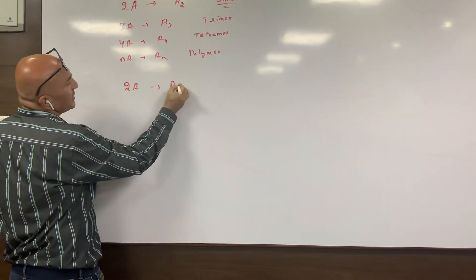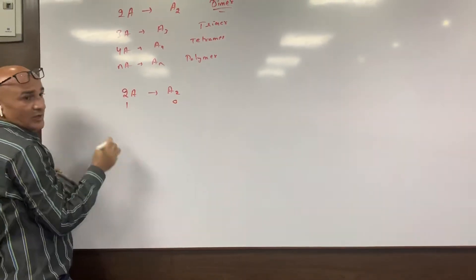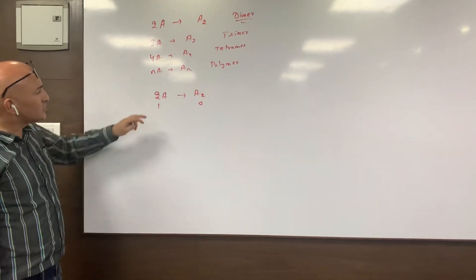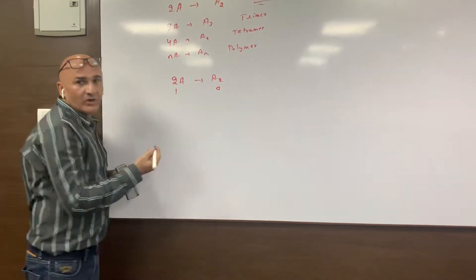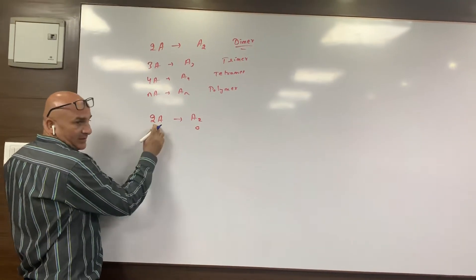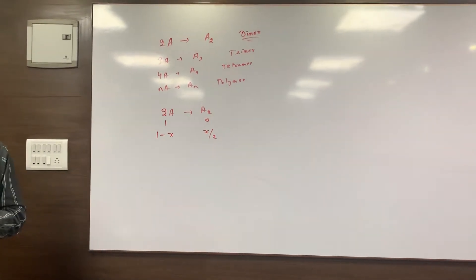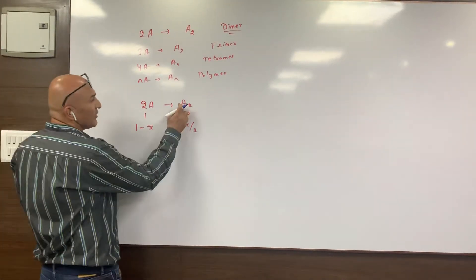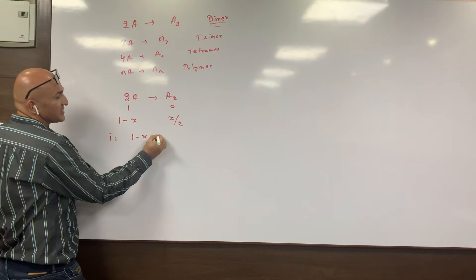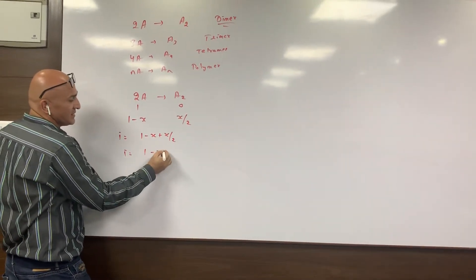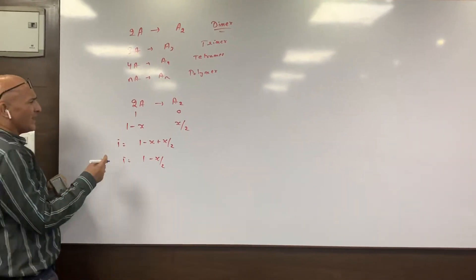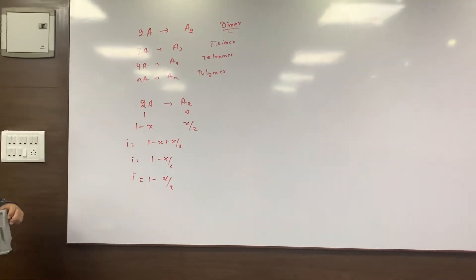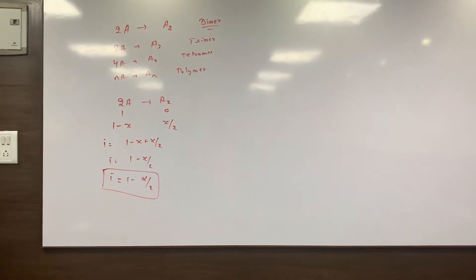For 2A → A₂: initially A = 1, A₂ = 0. Suppose a fraction α has associated. Then A remaining = 1 − α, and A₂ formed = α/2. So i = (1 − α + α/2) / 1 = 1 − α/2. Here α is the degree of association. So i = 1 − α/2.